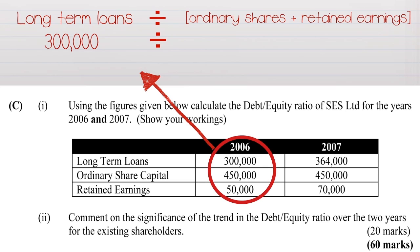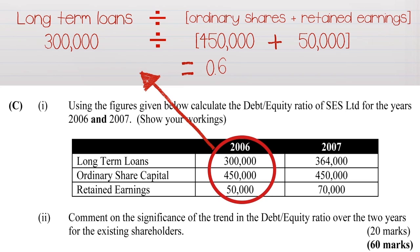In 2006, the ordinary shares were €450,000 and the retained earnings were €50,000. The formula then becomes €300,000 divided by €500,000, and our answer is 0.6. You must remember in the exam to express that as a ratio, so it's 0.6:1.